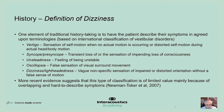The first category is vertigo, which is the sensation of self-motion when no actual motion is occurring, or distorted self-motion during actual head or body movements. Notice that this definition is broader than the traditional spinning sensation and includes the type of symptoms one may expect from otolith lesions and central pathways. These symptoms are often associated with peripheral or central vestibular causes of dizziness.